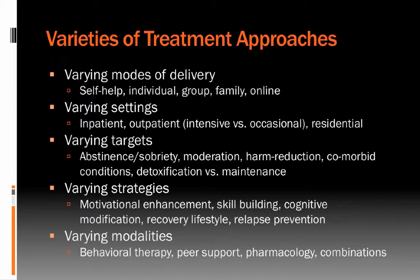Treatments can vary in what strategies they may use, and they may also vary in their modality. Some use behavior therapy, typically guided by a professional like a substance use counselor or a psychologist. Others may use peer support, like Alcoholics Anonymous. Pharmacological or pharmacotherapeutic agents can also be used. Most commonly with modern approaches, you'll see combinations of these approaches. We know that if any of these are effective by themselves, we like to throw as much as we can at a problem, so many treatment plans will include some combination of all these different approaches.